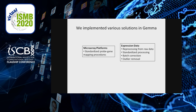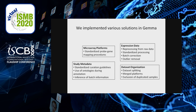Batch effect correction and outlier removal is also performed as necessary. On the metadata side of things, datasets are annotated based on a set of standardized curation guidelines with judicious use of ontology terms from 12 different ontologies. We also use a heuristic to infer the sample batching information, which is later used for batch correction.